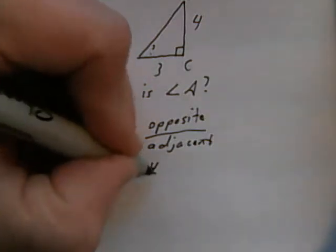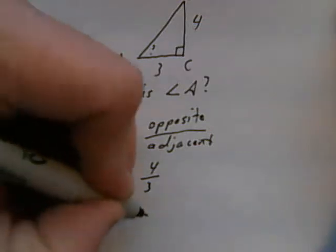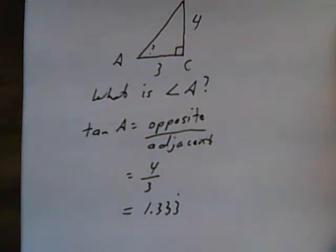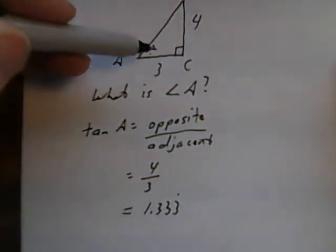In this case, that's going to be 4 divided by 3. That works out to 1.333 repeating. That is the tangent ratio for this angle.